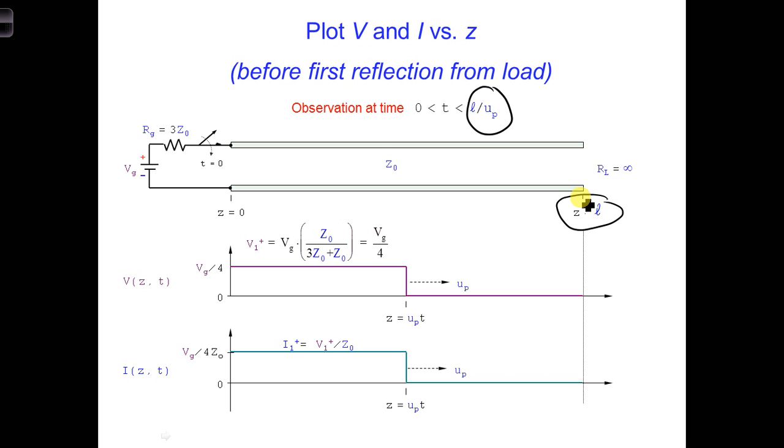When the switch closes, we can use a voltage divider at the generator to calculate the amplitude of the V1 plus wave. That's shown here, V1 plus. This step function plotted here has an amplitude of Vg over 4 from the voltage divider, and the step function has propagated a distance of UPt meters.